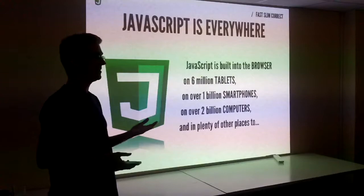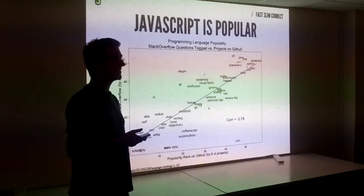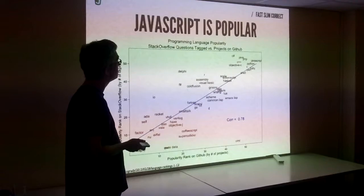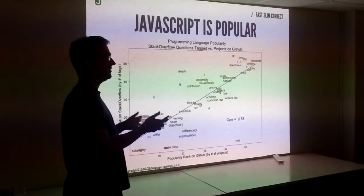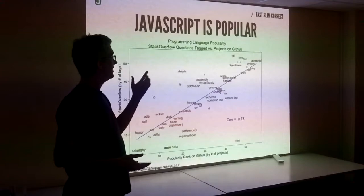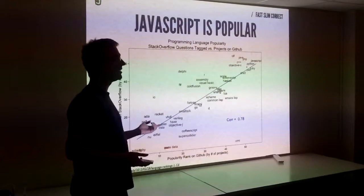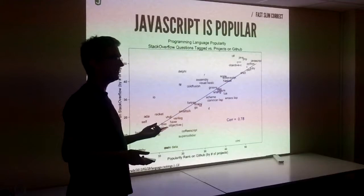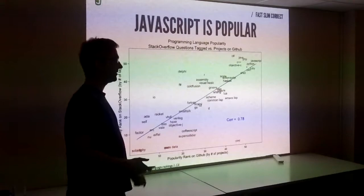So it's popular. This is a graph of Stack Overflow questions versus projects on GitHub. The most popular language on GitHub is JavaScript. Stack Overflow is the dirty little secret of programmers — you go there, somebody has asked your question, and you get a raft of answers. JavaScript is the most popular language there too. So JavaScript is very, very popular, and it's been around 18 years now.